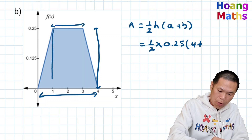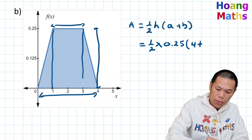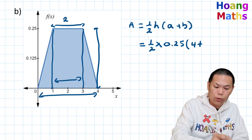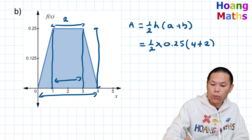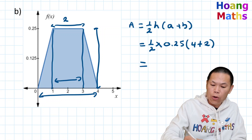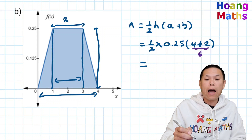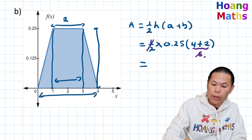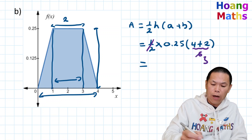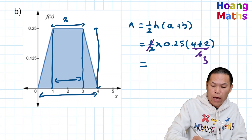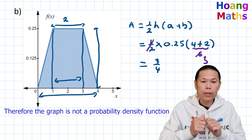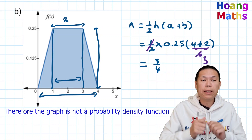We know that this side is one and this side is three, so B is two units. Adding A plus B gives six, half of six is three, and three times 0.25 is 0.75 — three quarters. That is not equal to one, so therefore this graph is not a probability density function.